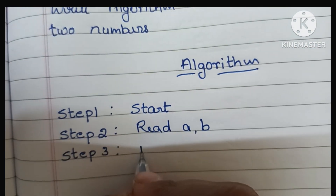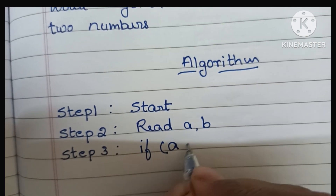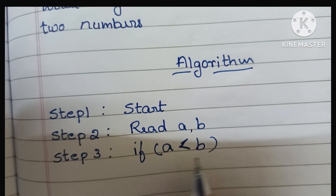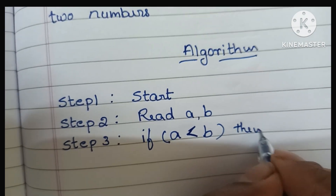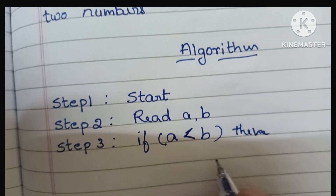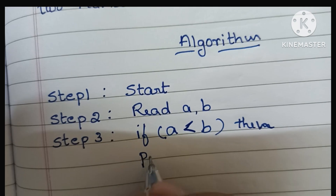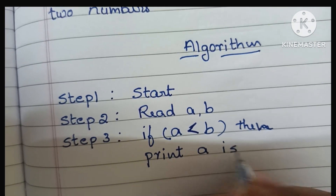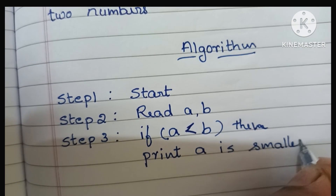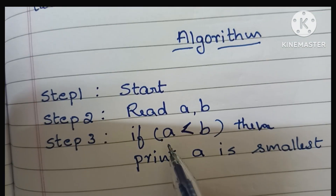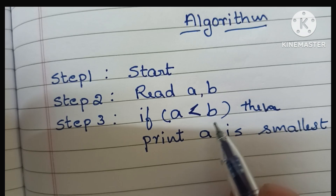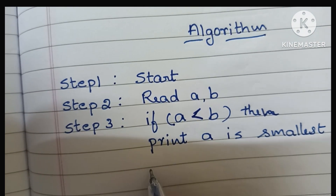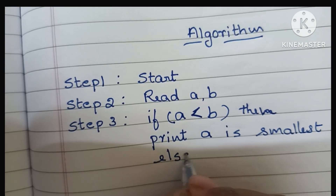Step 3: to find the smallest between two numbers we have to use an if condition. If a is smaller than b, and if this condition is true, we have to print 'a is smallest'. So here, if a is less than b and this condition is true, we print 'a is smallest'.